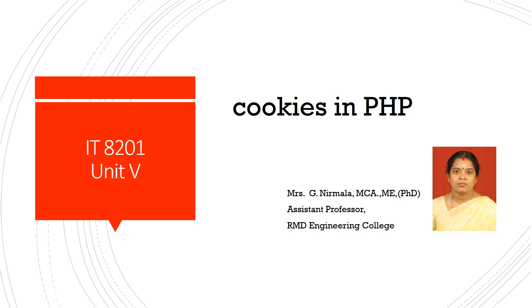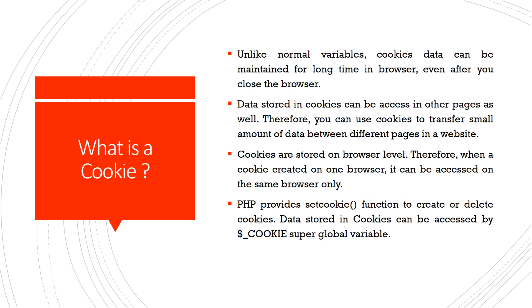What is a cookie? A cookie is used for storing information. It is stored in the hard disk. Unlike normal variables, cookies are used for storing data, and the cookie data can be maintained for a long time in a browser even after you close the browser. So it is stored in the history of the browser.